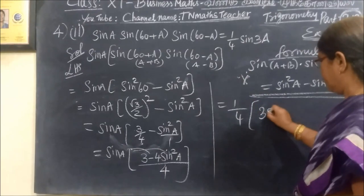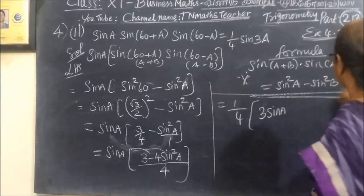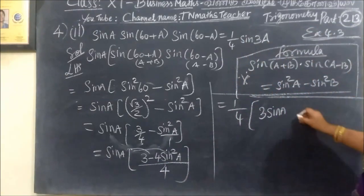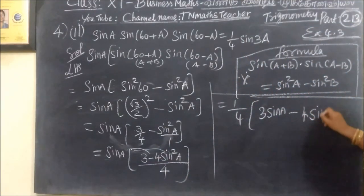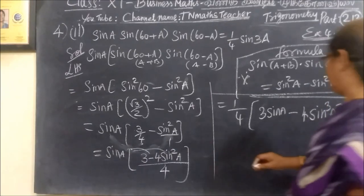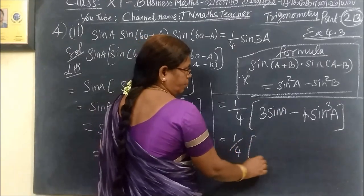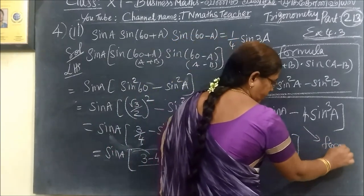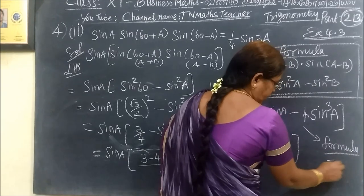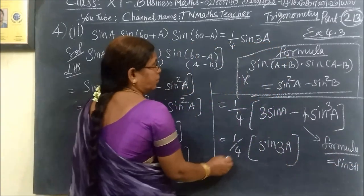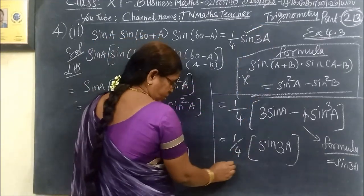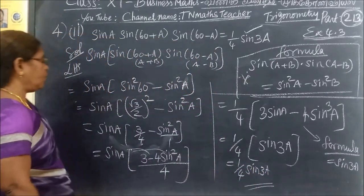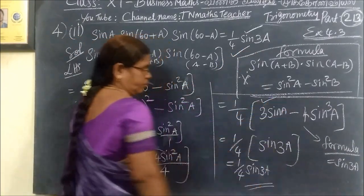So 3 Sin A. You know the formula already — taking Sin A inside, we get 3 Sin A minus 4 Sin³A. The formula for this is Sin 3A. So 3 Sin A minus 4 Sin³A equals Sin 3A. This is the formula we know already, and this equals Sin 3A. So multiplied by 1 over 4, we get (1/4) Sin 3A. This is the result we want to prove.